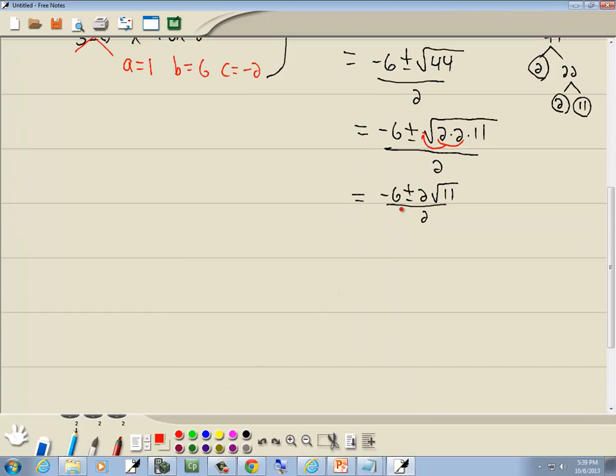3 number rule: if you're dealing with a quadratic formula and you can divide this number, this number, and this number by the same number, do so. Well those are all divisible by 2. Negative 6 divided by 2 gives us negative 3 plus or minus 2 divided by 2 is 1 square root of 11 over 2 divided by 2 is 1. Which gives us negative 3 plus or minus square root of 11.